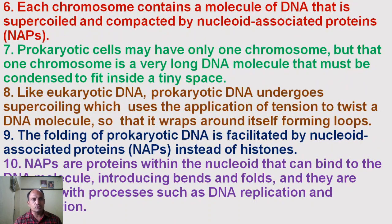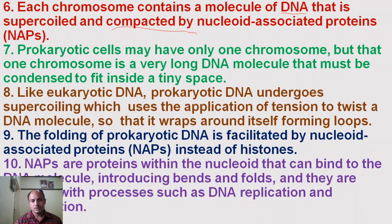Each chromosome of the prokaryotic cell consists of a DNA molecule. It is supercoiled and compacted by nucleoid-associated proteins, which are called NAPs or nucleoid-associated proteins.